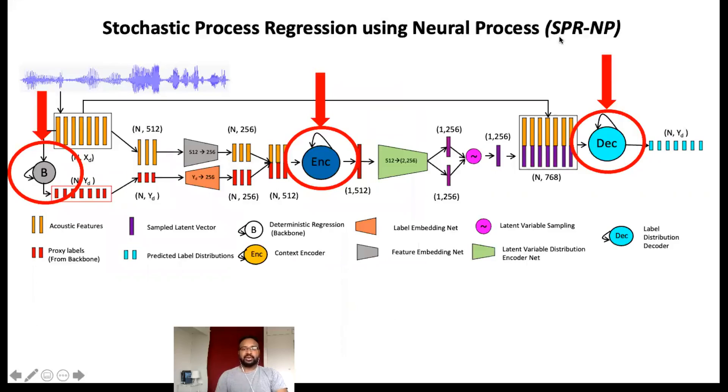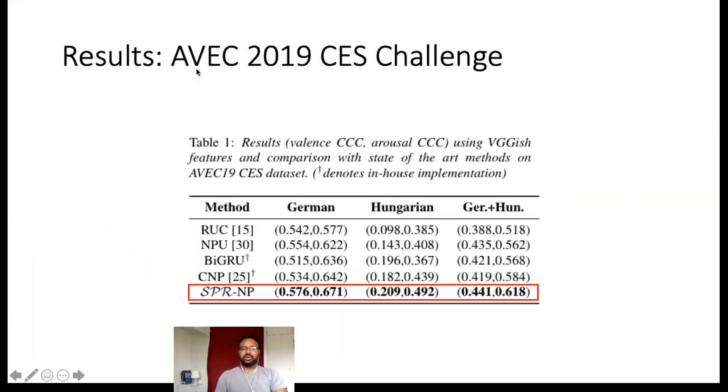We implemented our framework using three recurrent neural networks for realizing the backbone encoder and decoder models. Our experimental results on AVEC 2019 challenge dataset show that when deep learning features are used, our method achieves state-of-the-art performance and it outperforms all the existing deterministic regression models in both intraculture and multiculture settings.